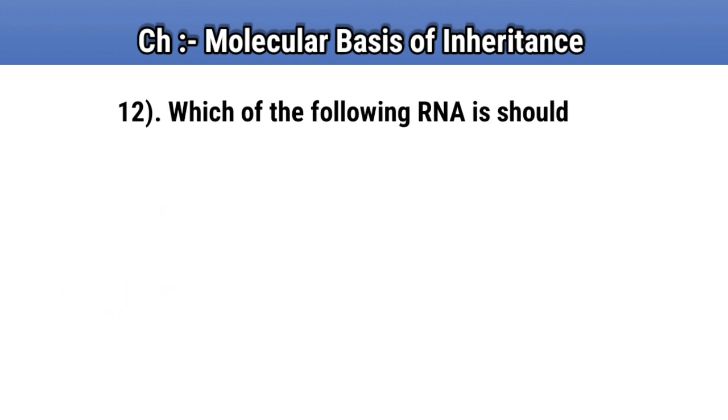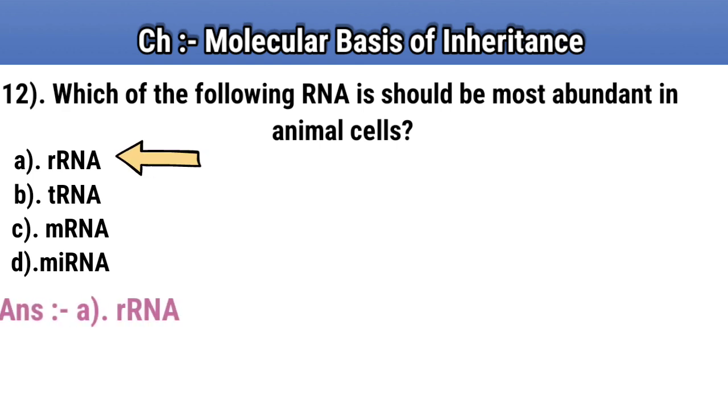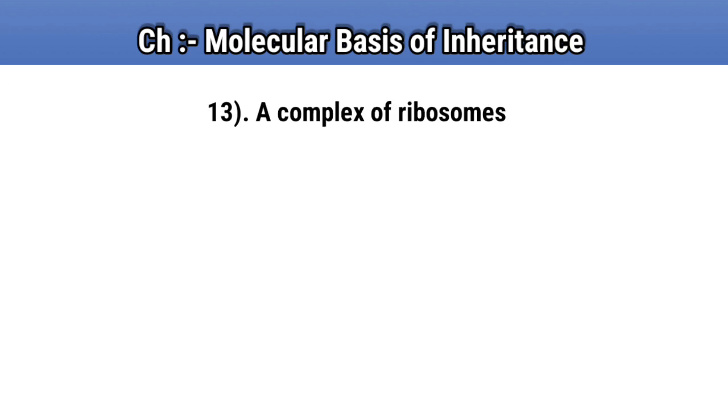Question number 12. Which of the following RNA should be most abundant in animal cells? Option A: rRNA. Option B: tRNA. Option C: mRNA. Option D: miRNA. Answer A: rRNA.